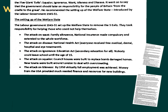The attack on squalor saw council houses rebuilt to replace bomb-damaged homes, and new towns built around London to deal with overcrowding - the government decreasing class divisions by ensuring everyone had access to homes. The attack on idleness meant that by 1950, virtually full employment was achieved. Money from the USA also provided much-needed finance and resources for new buildings, so the government relied not just on UK taxes but also on American funds.